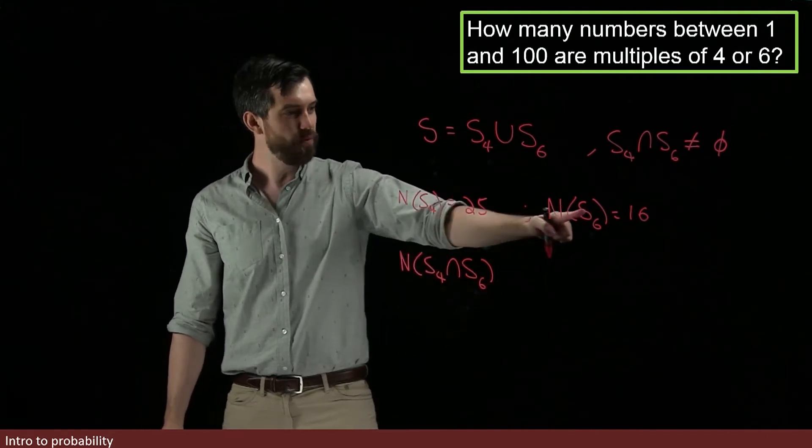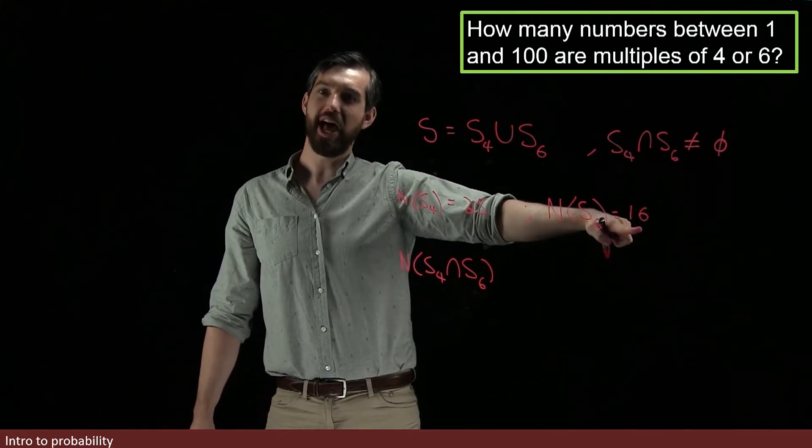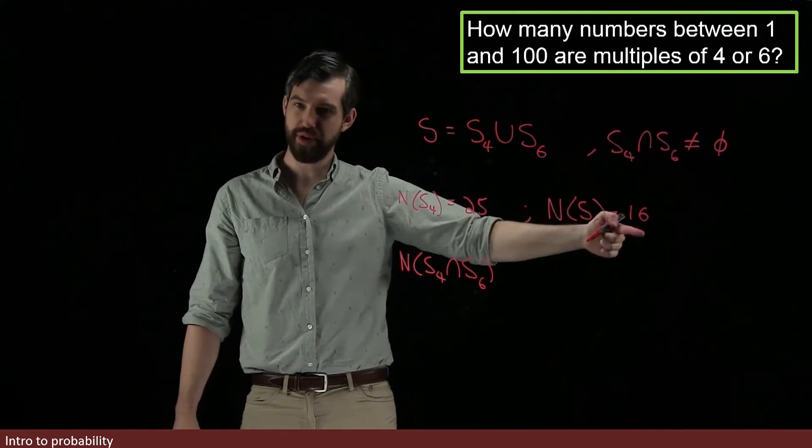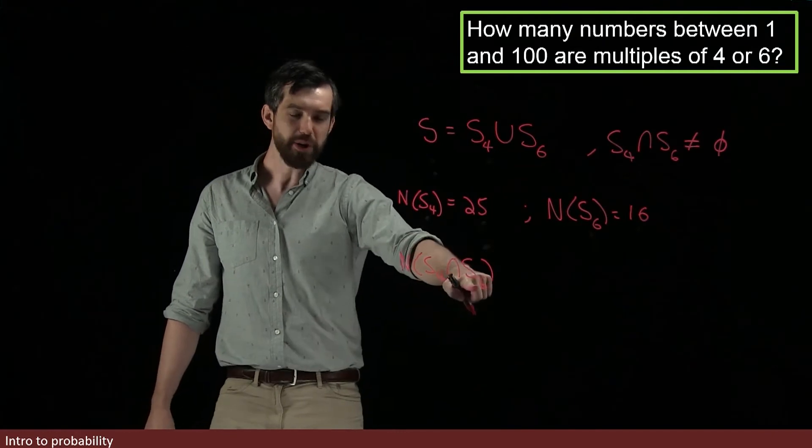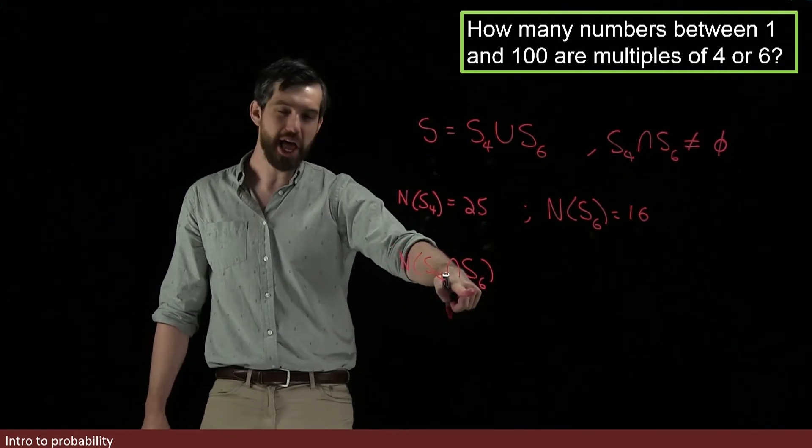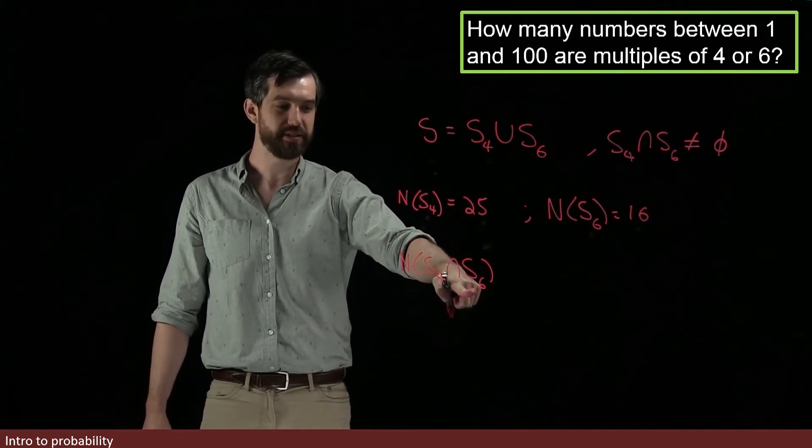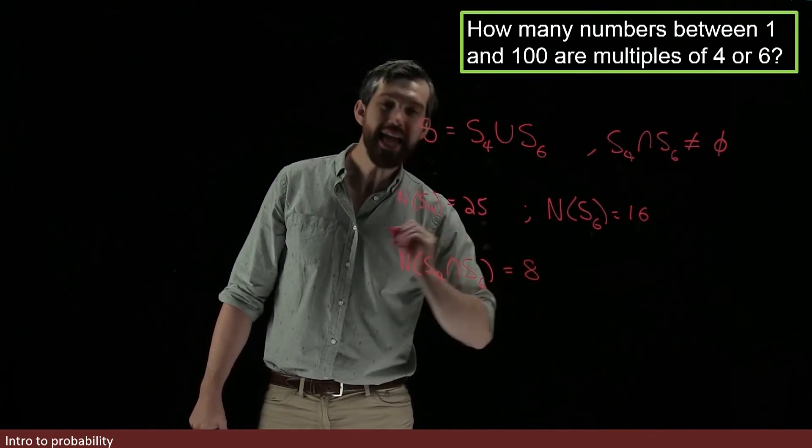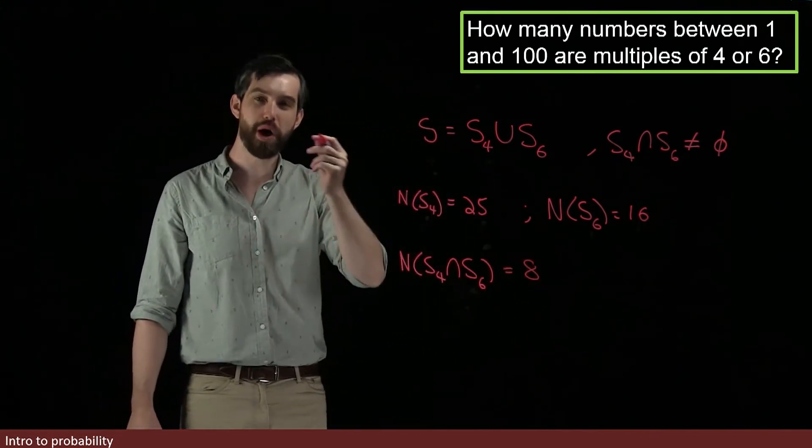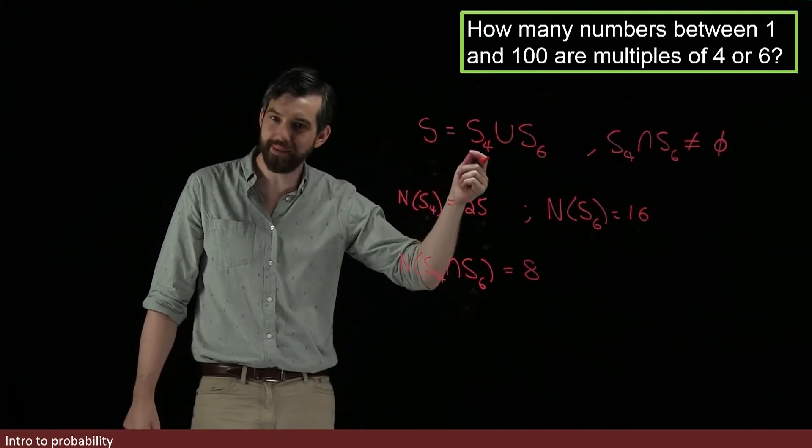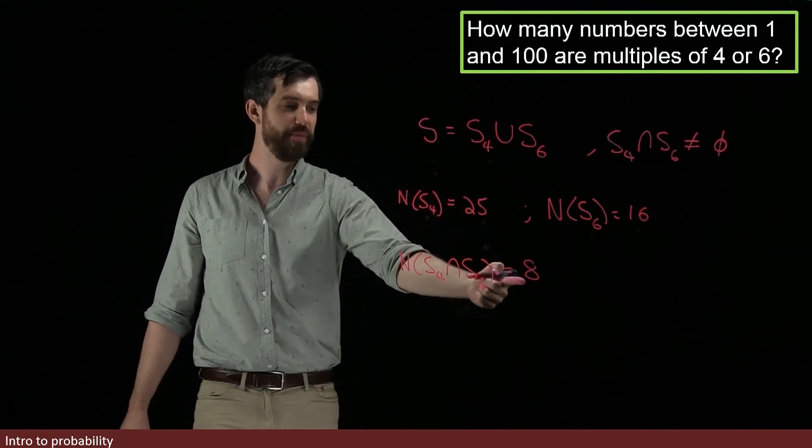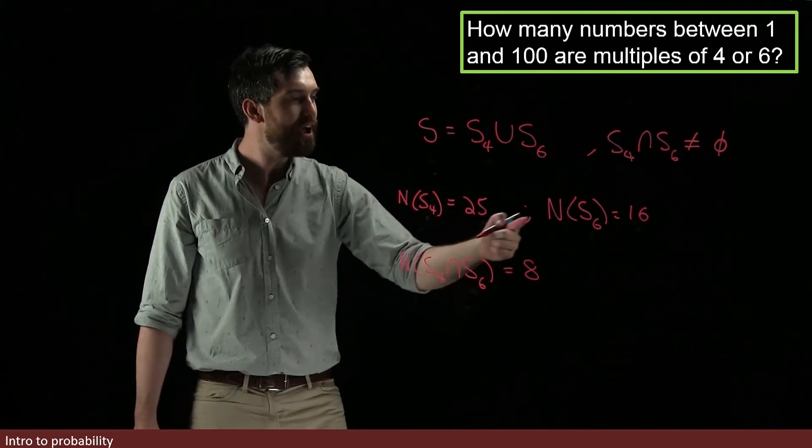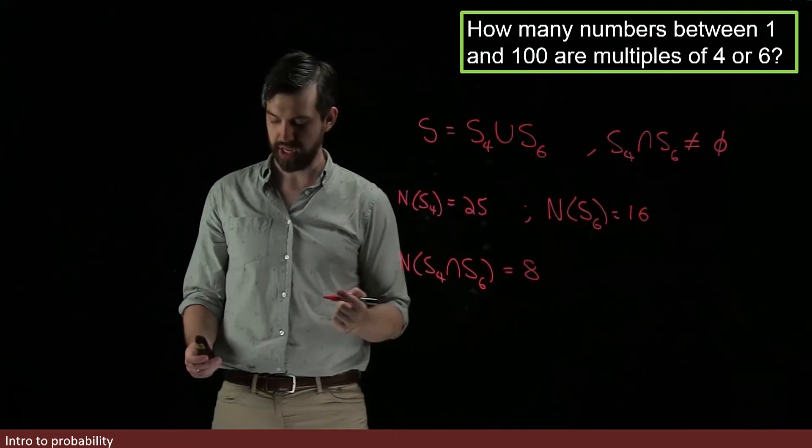In much the same way that 6 times 16 was going to give you 96, the multiples of 12, well, 8 times 12 is also 96. So, in other words, there are going to be 8 numbers. 12 times 1, 12 times 2, all the way to 12 times 8, which is 96. They're going to be less than 100. So, I have my three different values here.